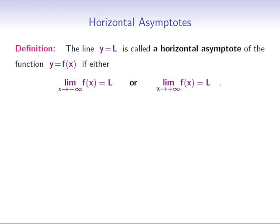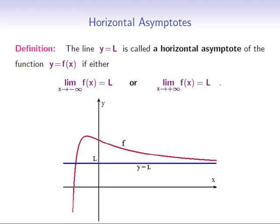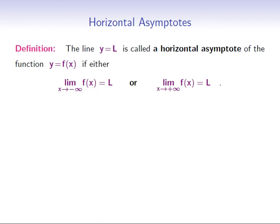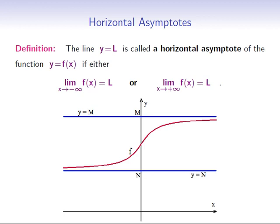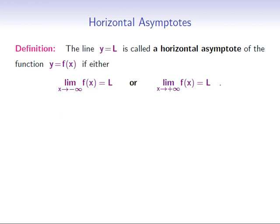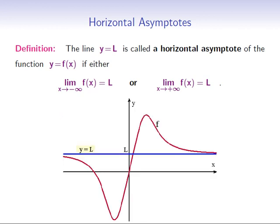The line y equals l is called the horizontal asymptote of the function y equals f of x if either the limit of f at positive or negative infinity is equal to l. Have a look at the following graph. The function f has one horizontal asymptote y equals l at positive infinity. However, here the function has two horizontal asymptotes: y equals m at positive infinity and y equals n at negative infinity. Here the function f has only one horizontal asymptote y equals l at both positive and negative infinity.